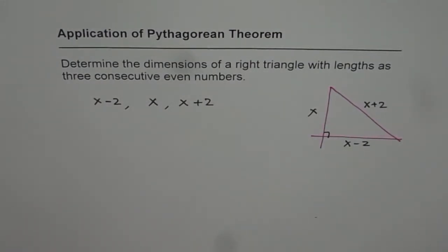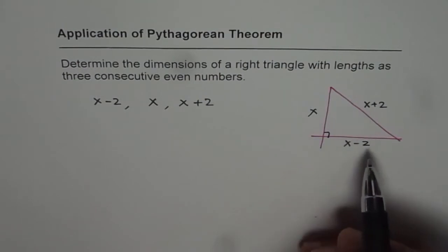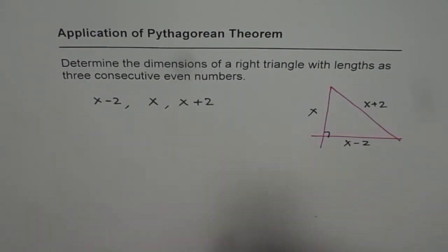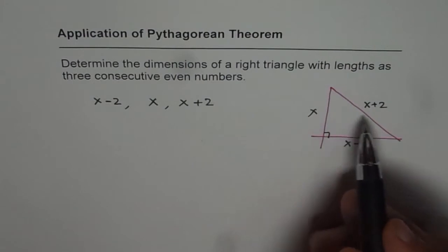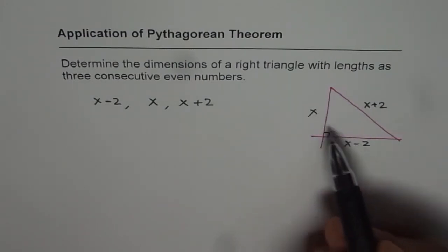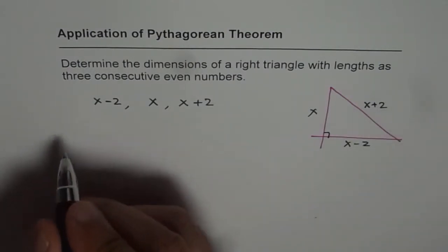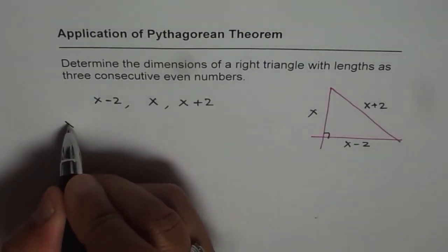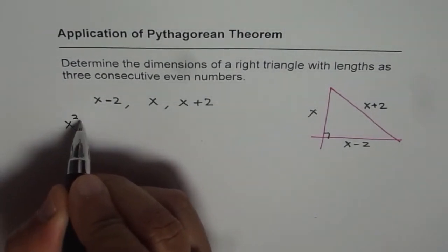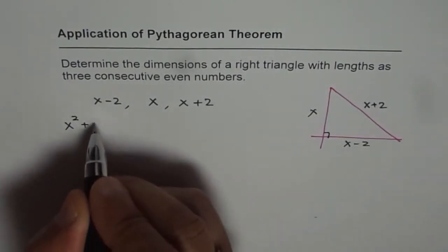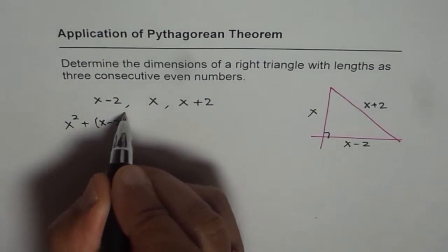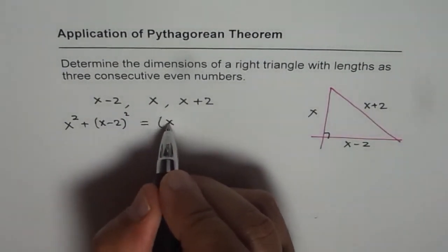Now we need to find all the three side lengths. So Pythagorean theorem relates the three sides of a right triangle and we know square of these two when added up is equal to square of the hypotenuse. So we can write down here this as x squared plus (x minus 2) squared equals (x plus 2) squared.